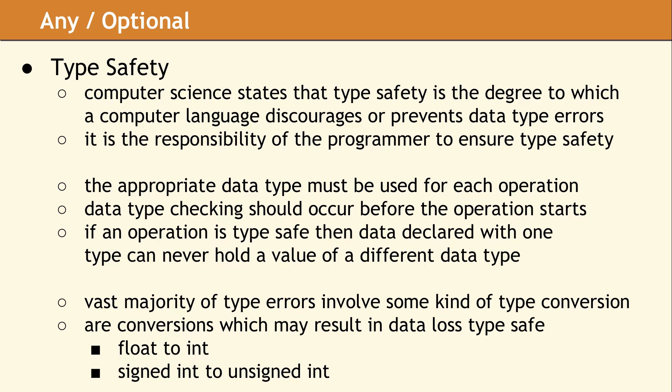For example, converting a float to an int involves truncating the fractional part. Some consider this unsafe, since precision has been lost in the conversion. Others consider this to be type-safe, since the operation converts a valid floating-point number to a valid integer in a consistent way. Regardless of your opinion in this area, it is important to consider conversions when you are evaluating a program to determine whether it is actually type-safe.